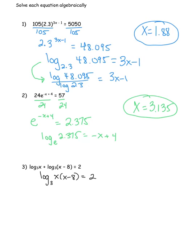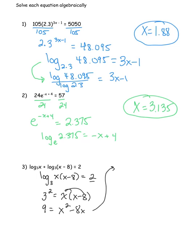From there — remember how in questions one and two we wrote things in log form to solve for an exponent? Now I want to undo a logarithm, so I'll write it in exponential form. This becomes: 3 squared equals x(x − 8). Now it's just a regular equation. I square the 3 to get 9, then distribute to get x squared minus 8x, giving me 9 = x² − 8x, which I recognize as a quadratic. Getting everything on one side: 0 = x² − 8x − 9.